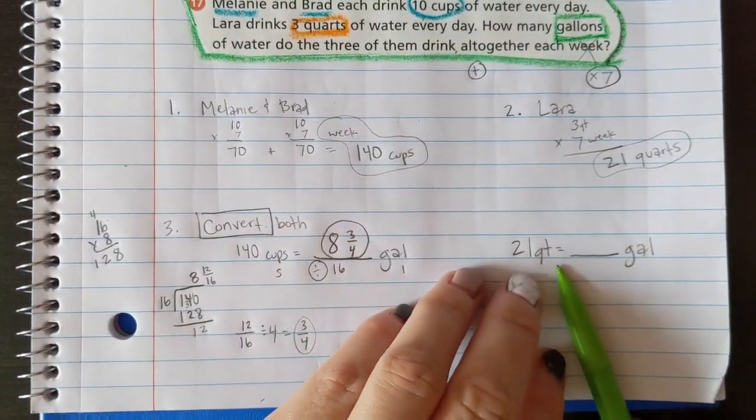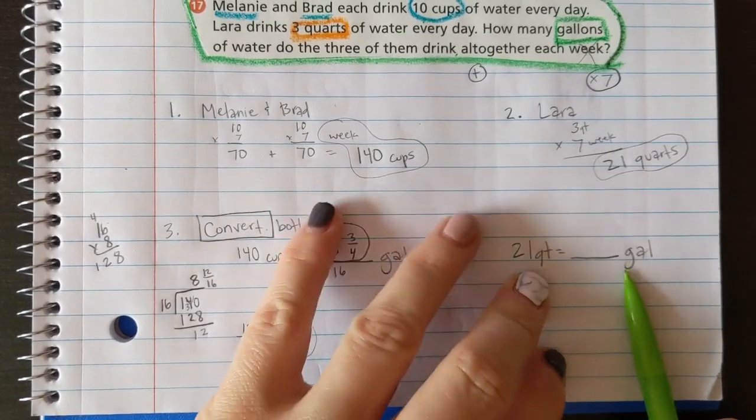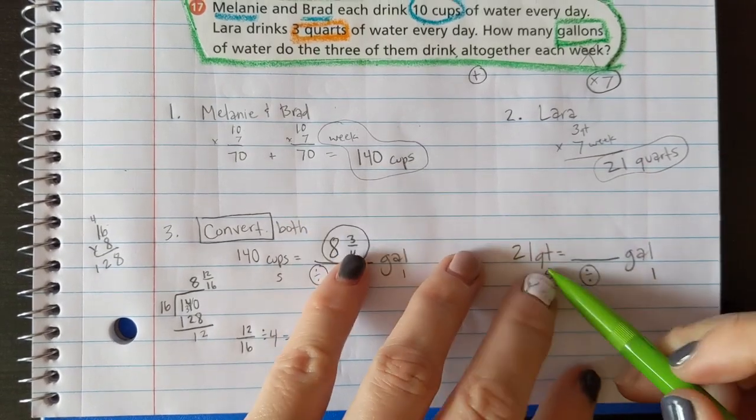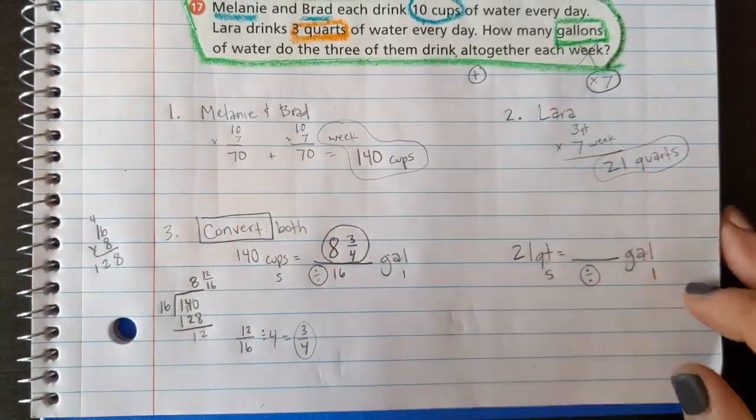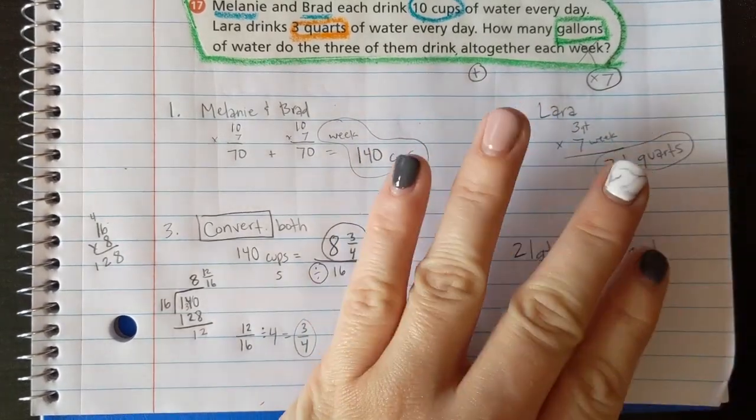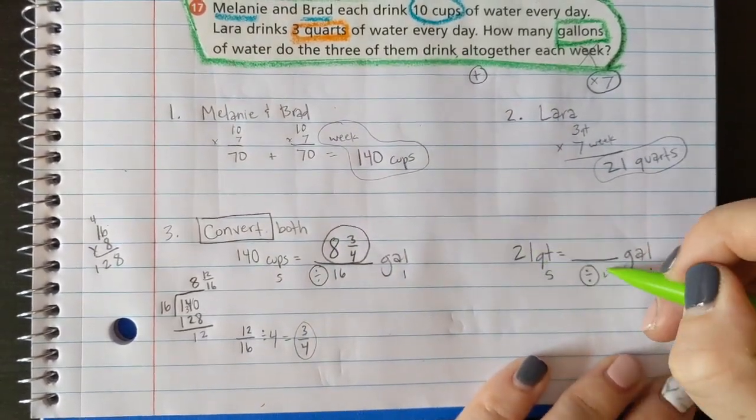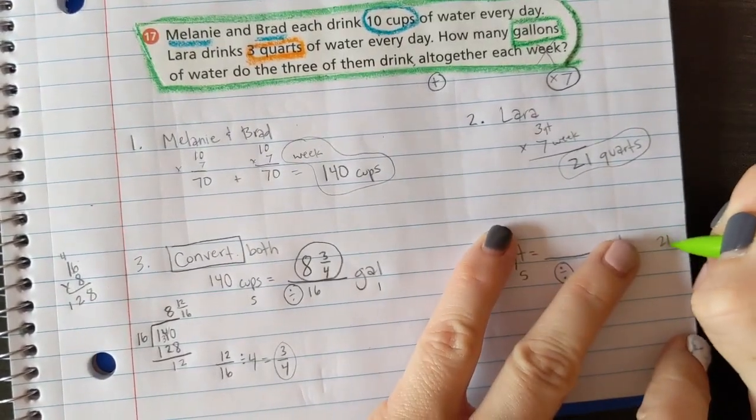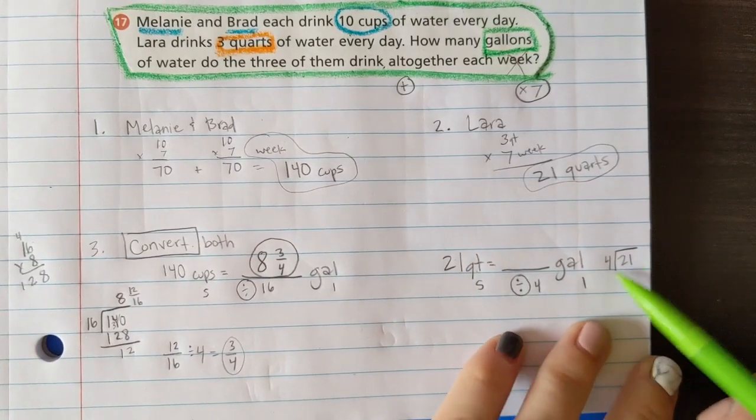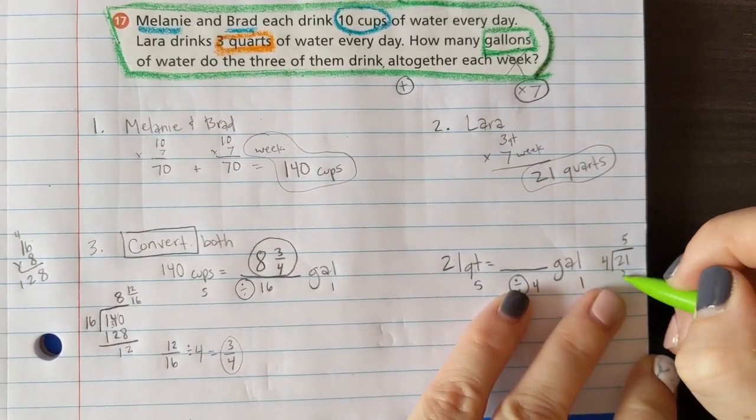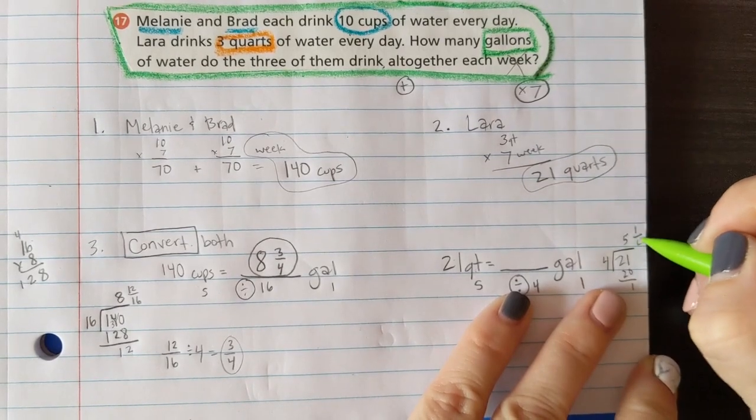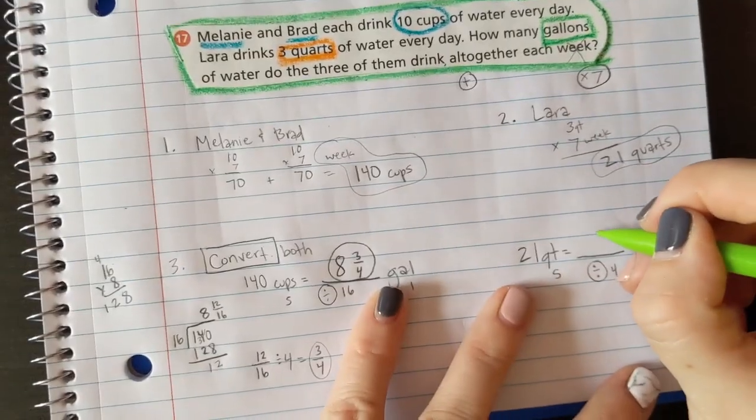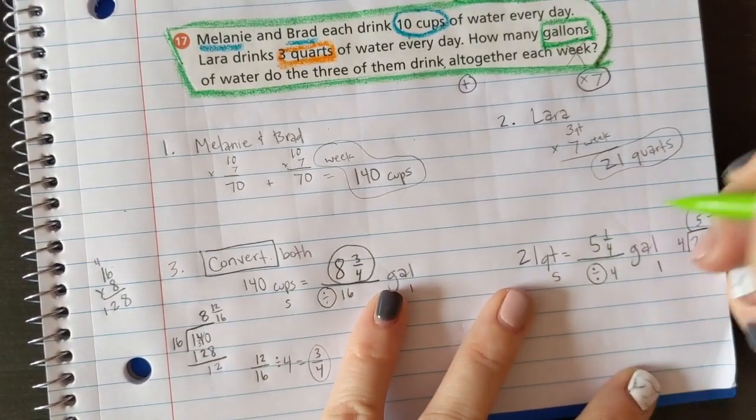Now let's go find out how much Laura drinks. Quarts into gallons, something small again into something large, so I am dividing. Windows into gallons - how many quarts are in a gallon? 4. We should just know that, 4. So I divide 21 by 4. Looks like this: 21 divided by 4. 4 goes into 21 five times with 1 left over, so you make that a fraction: 5 and 1/4. Am I done yet? No.